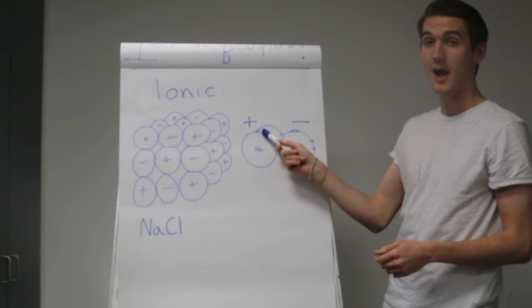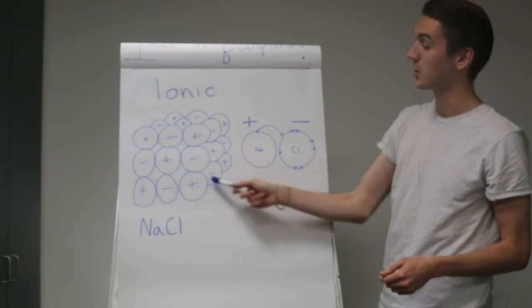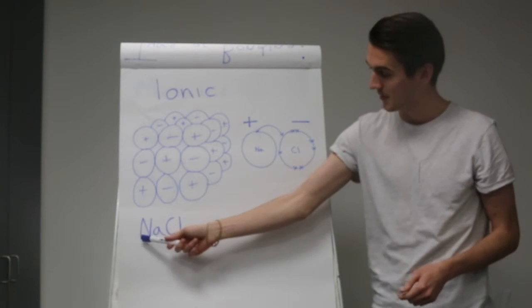Forming a negative and a positive ion, which attract each other, forming our ionic crystal lattice. For example here, we've got NaCl.